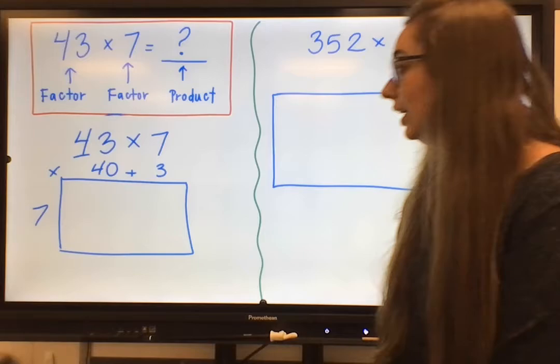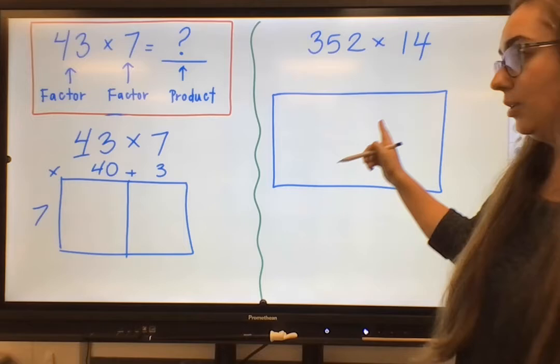We also will put a little multiplication symbol in that corner to show that we are multiplying 40 plus 3 by 7. Now, wherever I see that little plus symbol, I'm going to draw a line downwards.